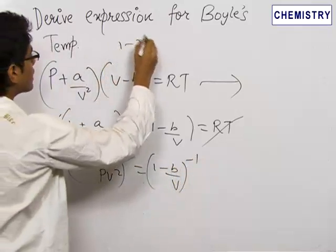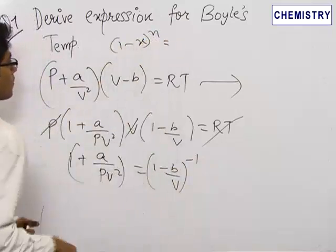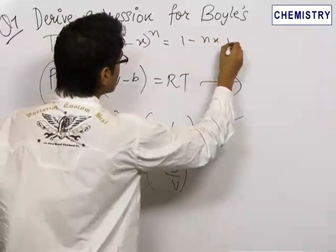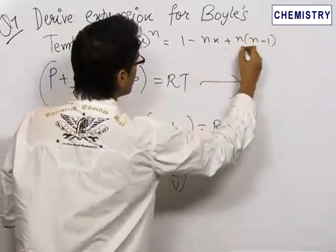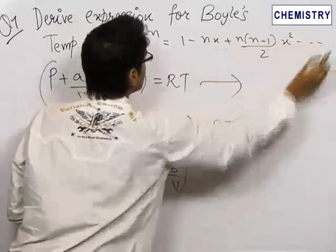Now, we know that 1 minus x power n from binomial theorem is equal to 1 minus nx plus n into n minus 1 by 2x square and so on.